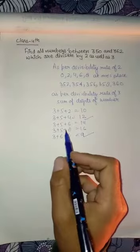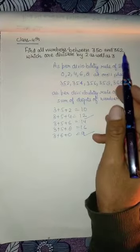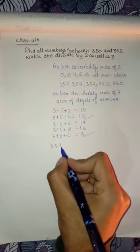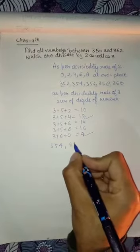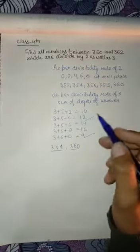Therefore, the numbers between 350 and 362 that are divisible by both 2 and 3 are 354 and 360. This is how we solve these types of questions.